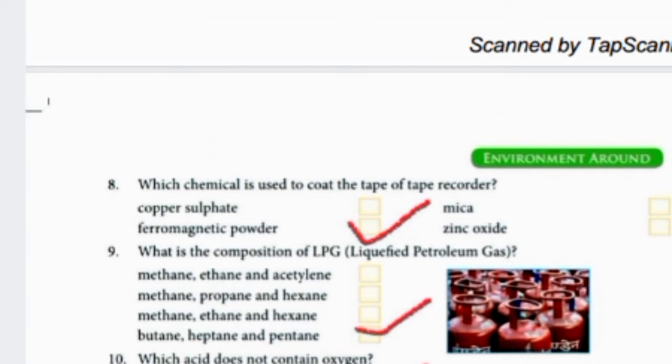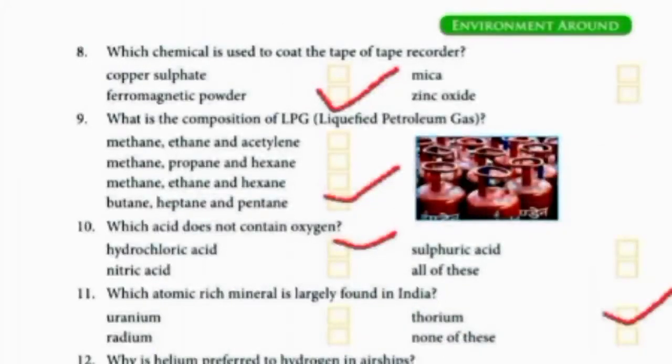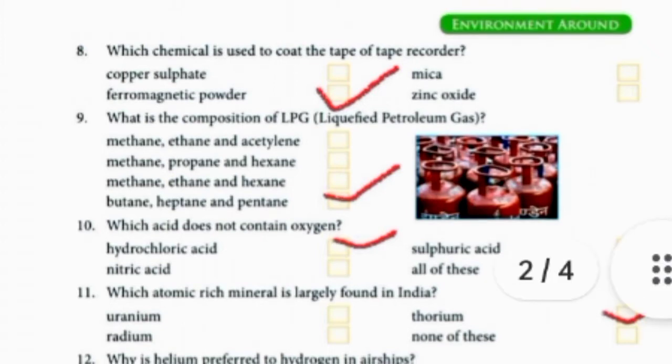Which acid doesn't contain oxygen? Sulfuric acid is H₂SO₄ and nitric acid is HNO₃ — both contain oxygen. But hydrochloric acid is HCl, which does not contain oxygen.